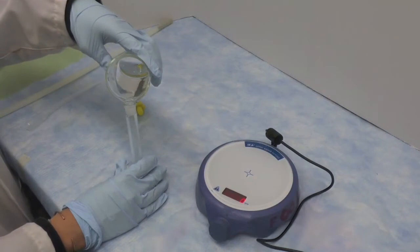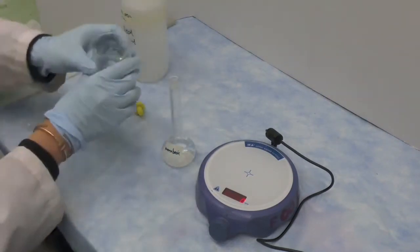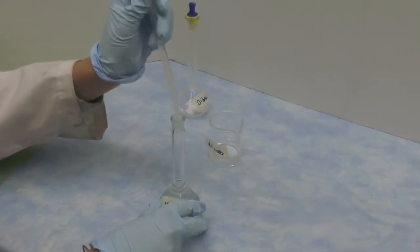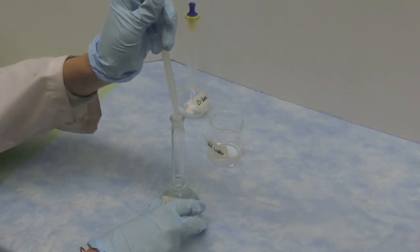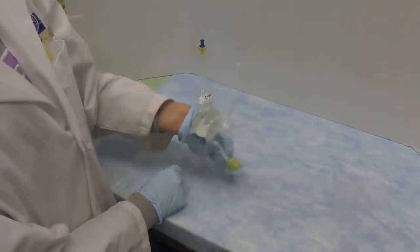Then transfer each solution to a 15 ml volumetric flask and make up to volume with dd water with the help of the disposable transfer pipette. Invert the flask a few times to mix the solution.